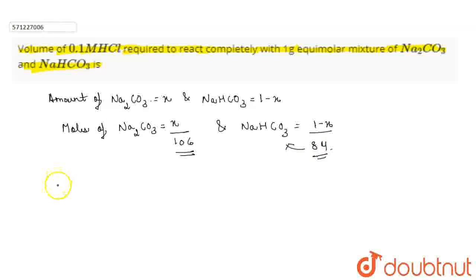Clear? Now, according to the question, number of moles of Na2CO3 are equal to the number of moles of NaHCO3. So, we can write it as x by 106 is equal to 1-x by 84. Now, let's solve this.